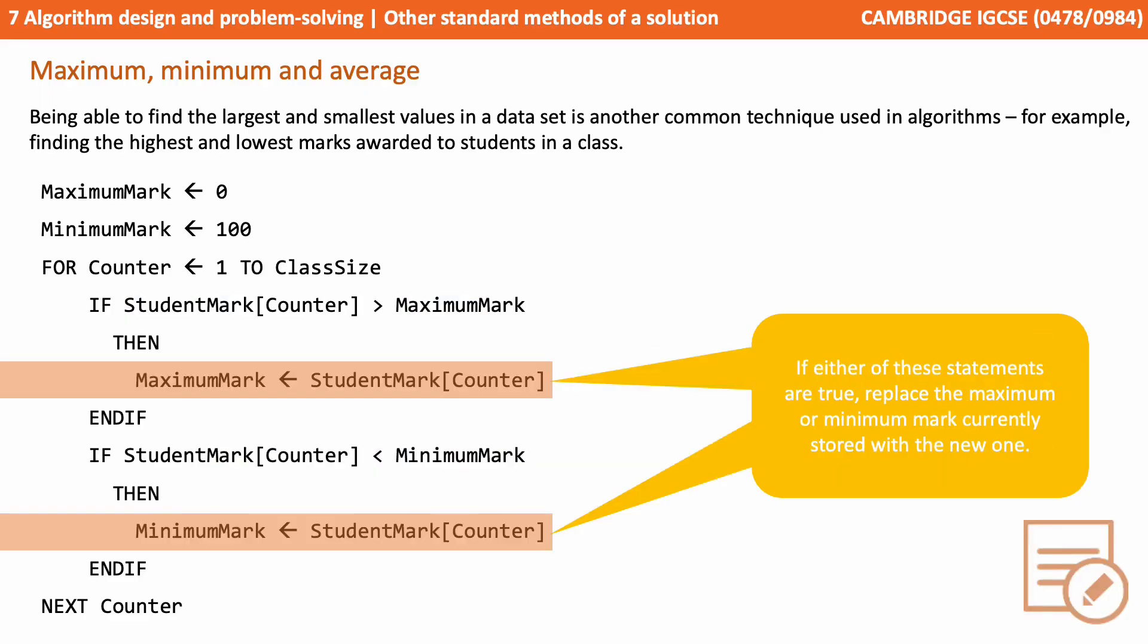If either of these statements are true, then we replace the maximum or minimum mark currently stored with the new ones as appropriate. If the largest and smallest values were not known, we could use a slightly alternative method where we set the maximum and minimum values to the very first item in the list and then update as appropriate.